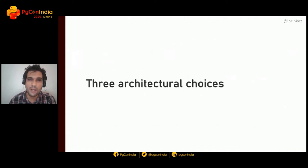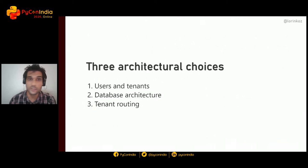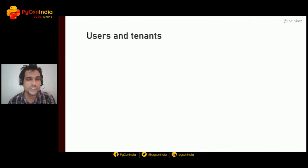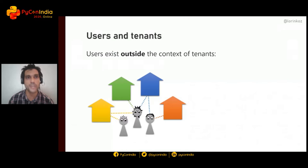Once you have the concept of the active tenant, you face three architectural choices needed to implement multi-tenancy: users and tenants, database architecture, and tenant routing. Let's look at each. Tenants are spaces in which users with specific privileges interact, but the relationship between users and tenants can take three different shapes.